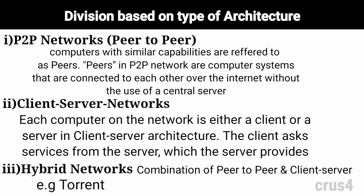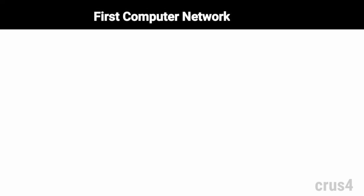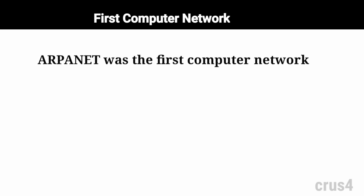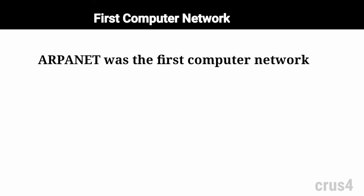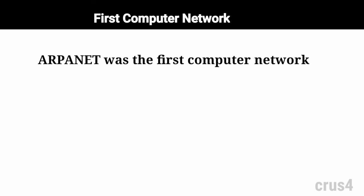So those are the types of networks. Before moving to the summary, one more important thing: ARPANET was the first computer network — it may be asked in interview questions or computer exams. ARPANET stands for Advanced Research Projects Agency Network. Note it down because it is a very important point.